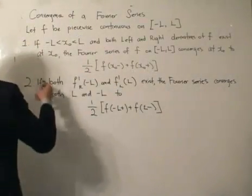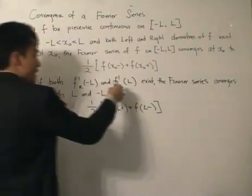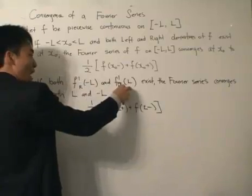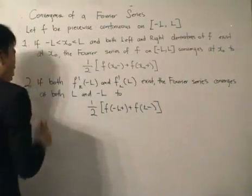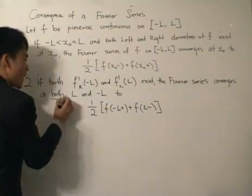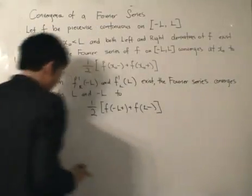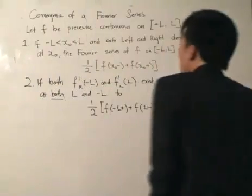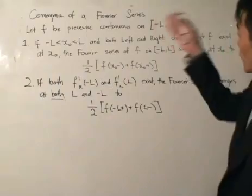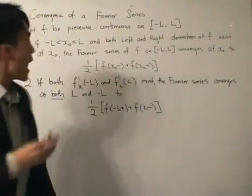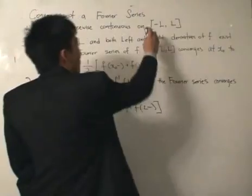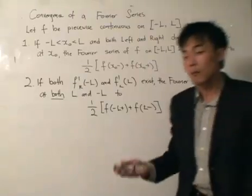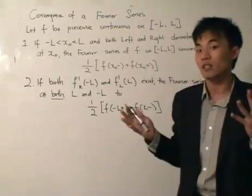Now, part two: if both the right-hand derivative and the left derivative exist respectively at minus l and l, the Fourier series converges at both minus l and l to this expression. Let's take some time to talk about this because it's vitally important that we know what we are dealing with. f is piecewise continuous, meaning that f may not be continuous throughout minus l to l. All the functions that we have dealt with thus far, at least most of them, we're dealing with piecewise continuous curves.